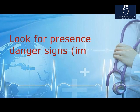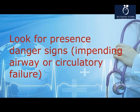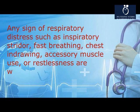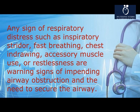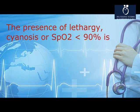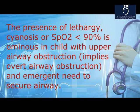Look for danger signs of impending airway or circulatory failure. Any sign of respiratory distress such as inspiratory stridor, fast breathing, chest indrawing, accessory muscle use, or restlessness are warning signs of impending airway obstruction. The presence of lethargy, cyanosis, or SpO2 below 90% is ominous in a child with upper airway obstruction and implies overt airway obstruction requiring emergent airway management.